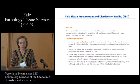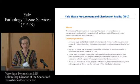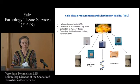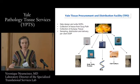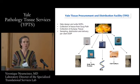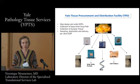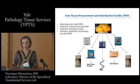Yale Tissue Procurement and Distribution Facility is run by Yalaibar, and the mission of this facility is to maximize access of human tissue to translational investigators. They do this by working with you and developing SOPs tailored to your question. They have people working in the operating room who collect tissue after SOPs are set up, then process them depending on what kind of tissue you want, how you want it stored, and what else you need. They also collect autopsy tissue and deliver it to you.